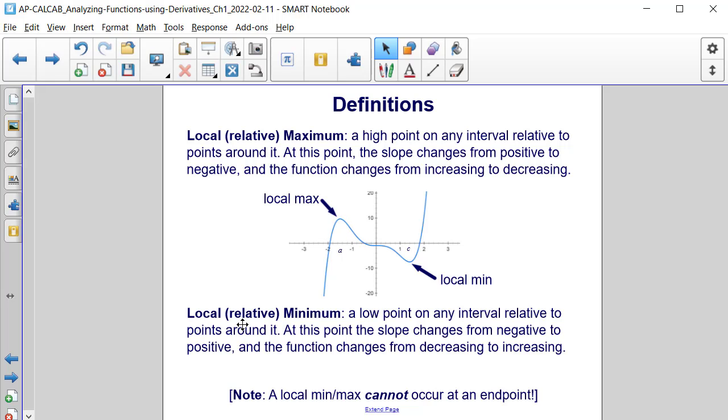We also have what's known as a local or relative minimum. It's a low point relative to points around it where the slope changes from decreasing to increasing.